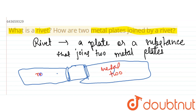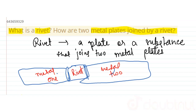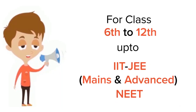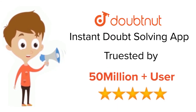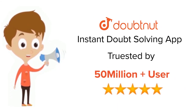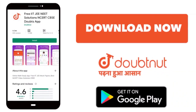And this is a rivet. For class 6 to 12th, IIT JEE, and NEET level — trusted by more than 5 crore students. Download the DoubtNet app today.